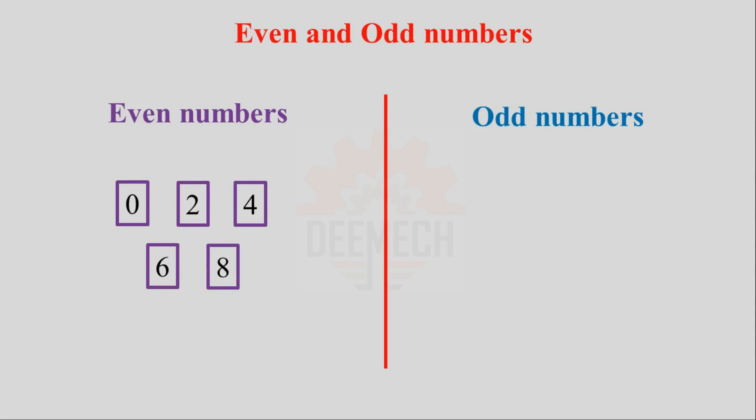Numbers like 0, 2, 4, 6, 8, or other examples 20, 56, 7, 30 etc. — these numbers are called even numbers.